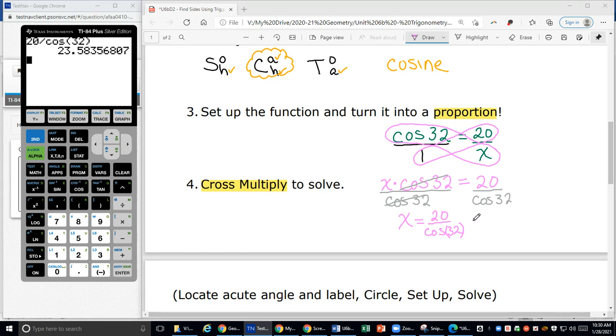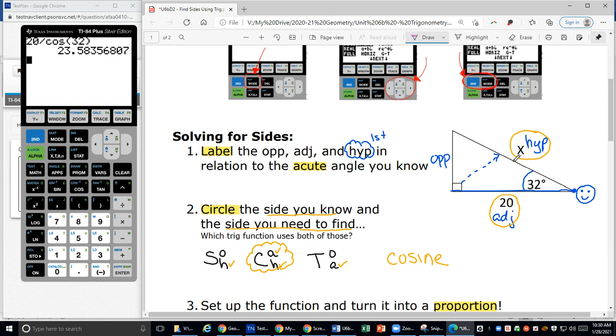When I hit enter, I get an answer of 23.583586807. We're going to round this to three decimal places. When I look at three places—5, 8, 3—then I look after that 3 and see it's a 5, so that means I'm going to bump that 3 to a 4. So 23.584 is how long that side is. This piece here is 23.584 units long.